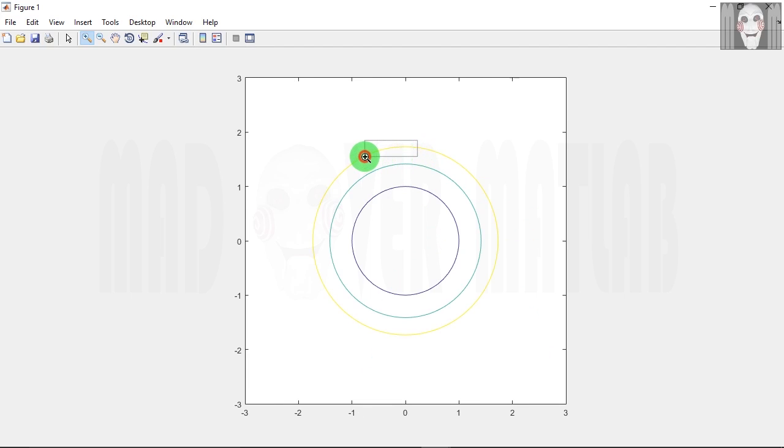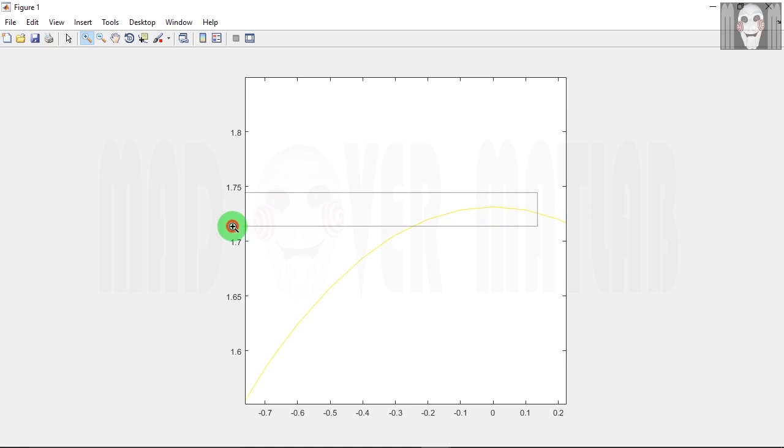And the third contour has a radius of 1.732 approximately, which corresponds to root 3 since we had given the argument as 3.